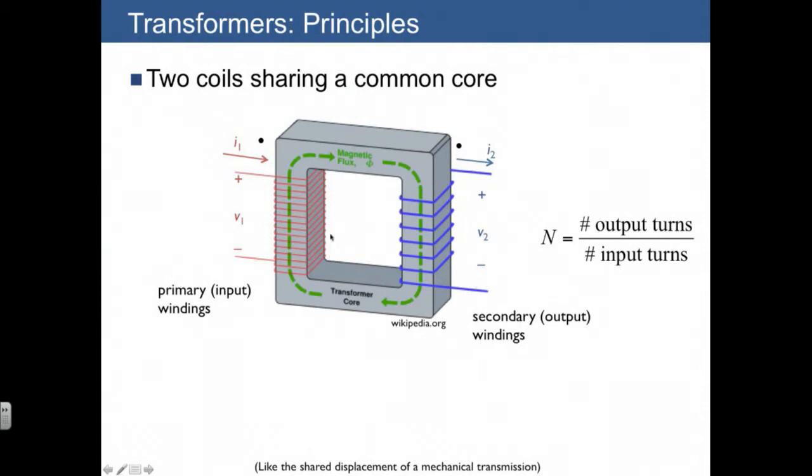The transformer properties are determined solely by the number of output turns divided by the number of input turns, often referred to by the number n. This is the ratio of secondary to primary windings.